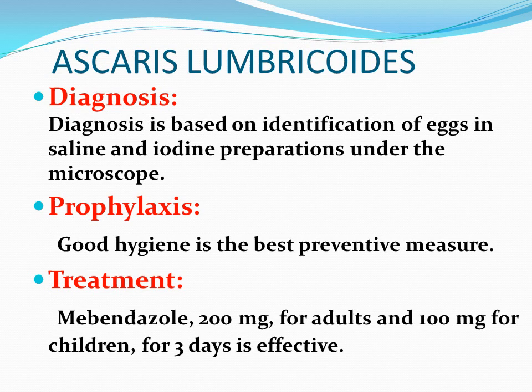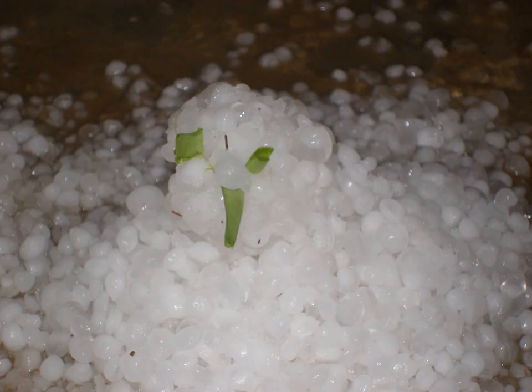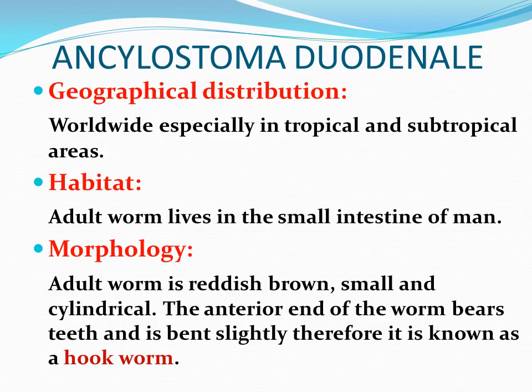The diagnosis is based on the identification of eggs within saline and iodine preparations of stool under the microscope. Occult blood in the stool is frequent. The prophylaxis is good hygiene, which is the characteristic preventive measure. The drugs of choice are albendazole, mebendazole, and ivermectin. Mebendazole, 200 mg for adults and 100 mg for children for three days, is effective. Here we come to an end of Ascaris lumbricoides.